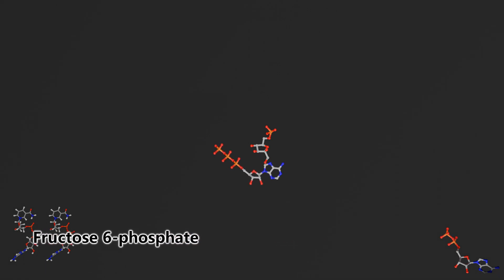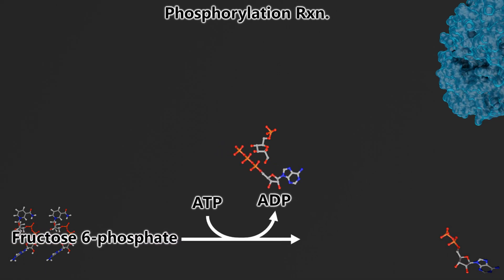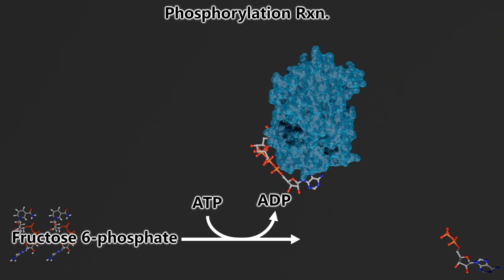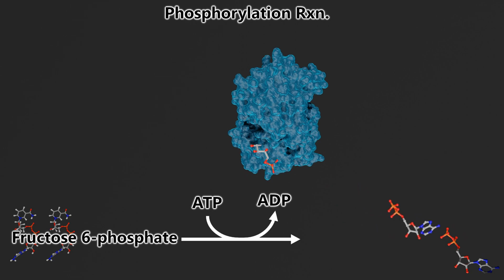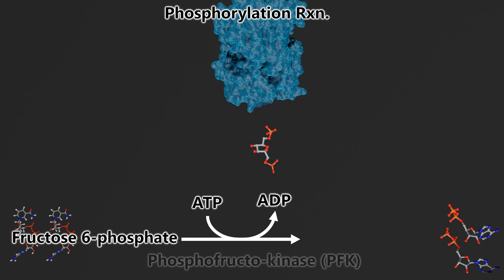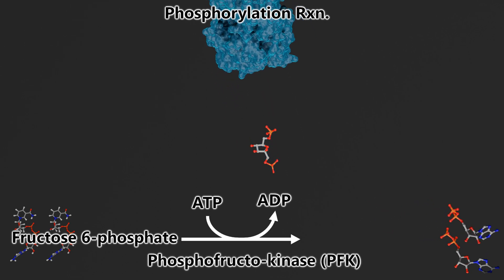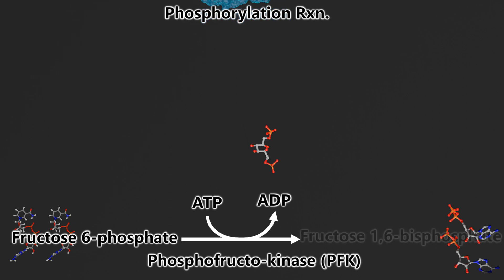In the third reaction, we're going to use another ATP molecule to phosphorylize our fructose 6-phosphate. The enzyme that's going to catalyze that is phosphofructokinase, also known as PFK, and that is going to produce fructose 1,6-bisphosphate.